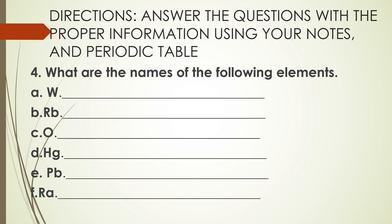Number four: what are the names of the following elements? What do W, Rb, O, Hg, Pb, and Ra mean? In the blank, write the name of each element — write the name for W, write the name for Rb, and so on.